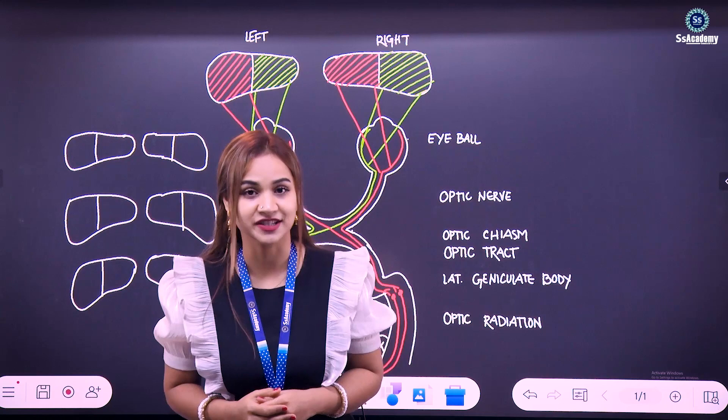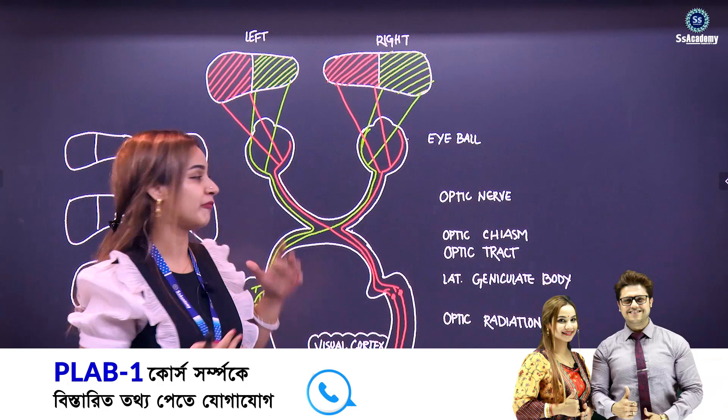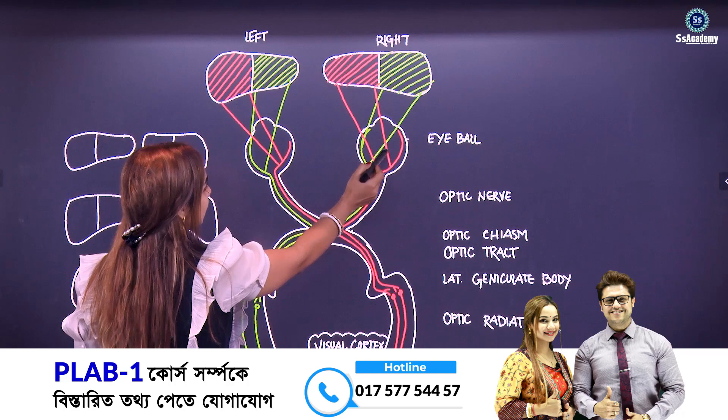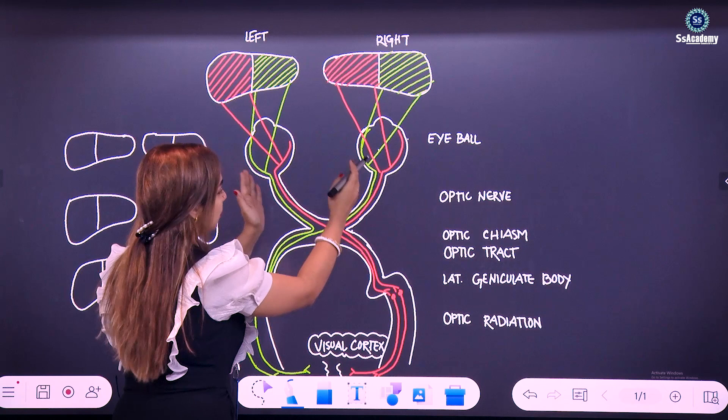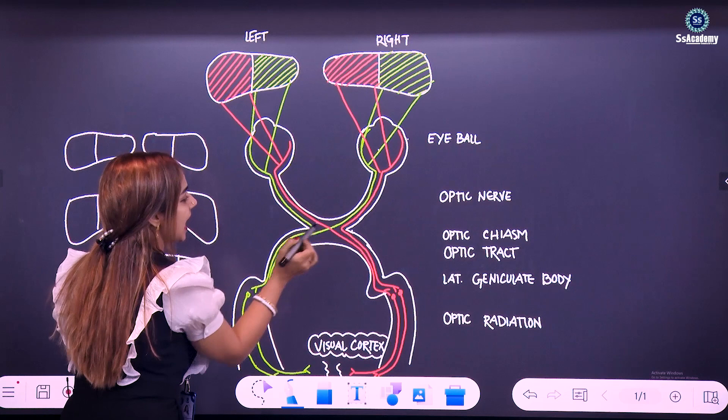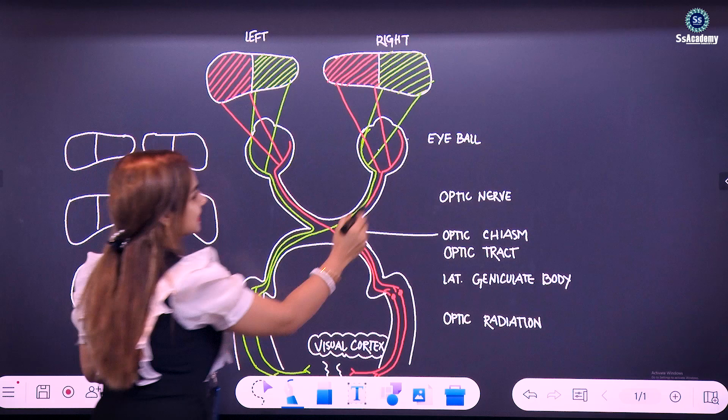Before starting to know about visual field defects, you have to know the visual pathway. I have put in a diagram for you. This is the right eye and this is the left eyeball. From the eyeball, this is the optic nerve coming down, and the two optic nerves coming down from the left and right side of the eyeball are crossing over here, and this crossing is called the optic chiasm.